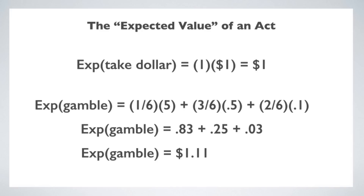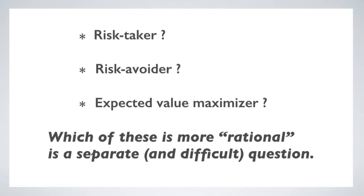The fact that you'll make more money in the long run taking the gamble doesn't tell us what we should do in the short run. It's an objective fact that the gamble has a higher expected value than taking the dollar. But to take the view that we should always choose the act that maximizes expected value is to adopt a very specific theory of rationality. A lot of ink has been spilled over the past 200 years on whether we can turn expected value maximization into a general theory of rational choice. There are some serious objections to thinking that we can, but I won't get into those here.